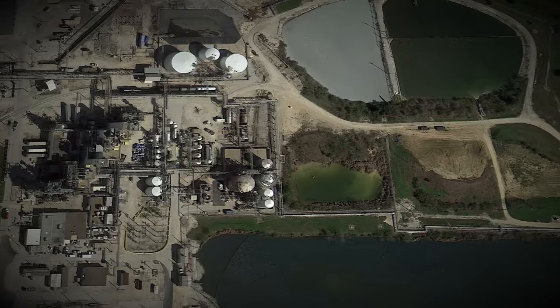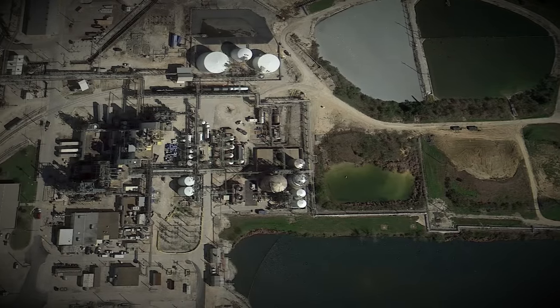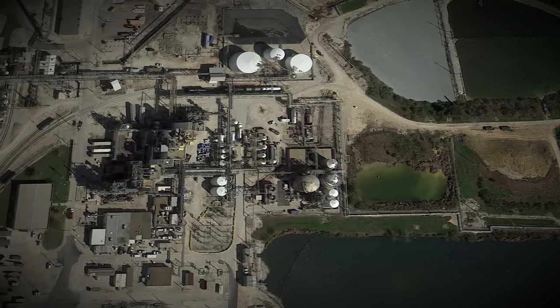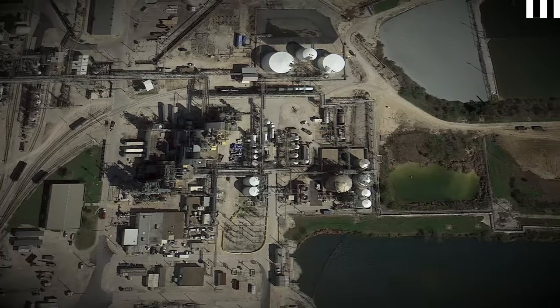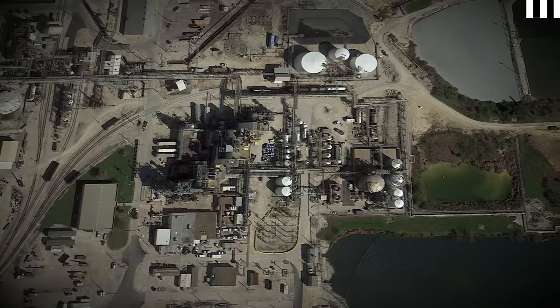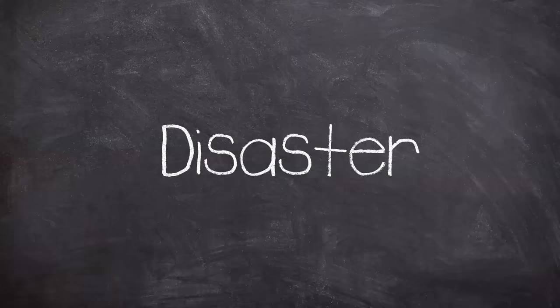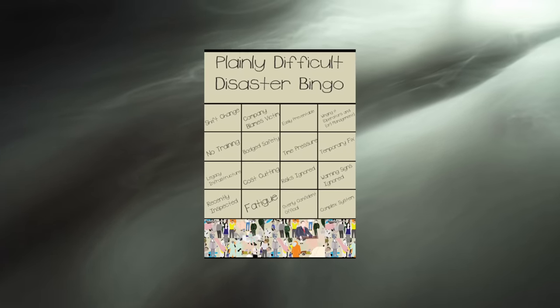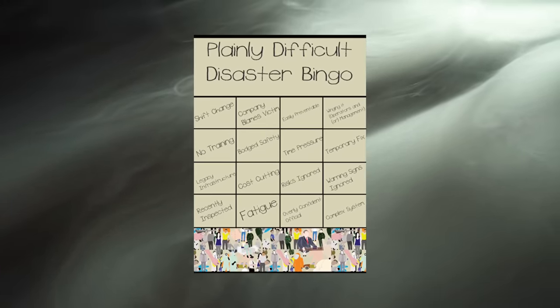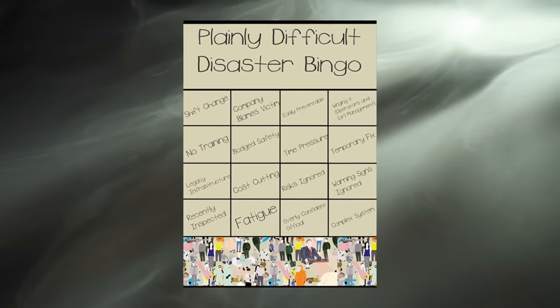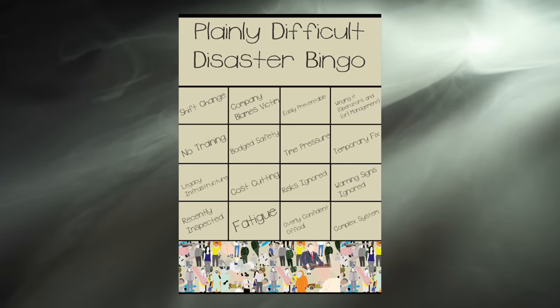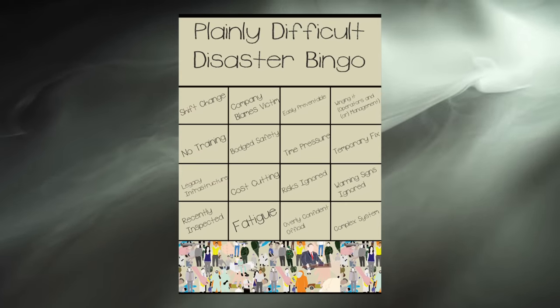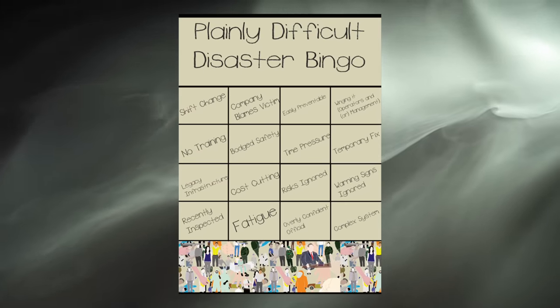Over the years, parts of the site would be sold off to third party companies, which reduced the amount of actual DuPont staff working at the Laporte chemical plant. So this rather neatly leads us onto The Disaster. OK, so before I start the disaster outline, I'm going to show you this patented, well not really patented, plainly difficult disaster bingo card. Take a picture of it, and cross it off as we get going along this disaster outline.